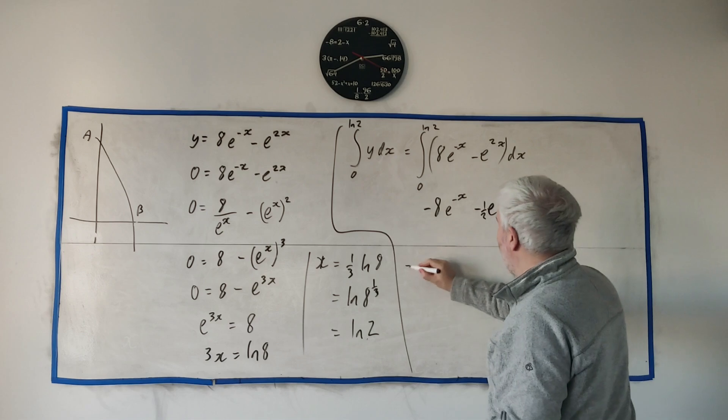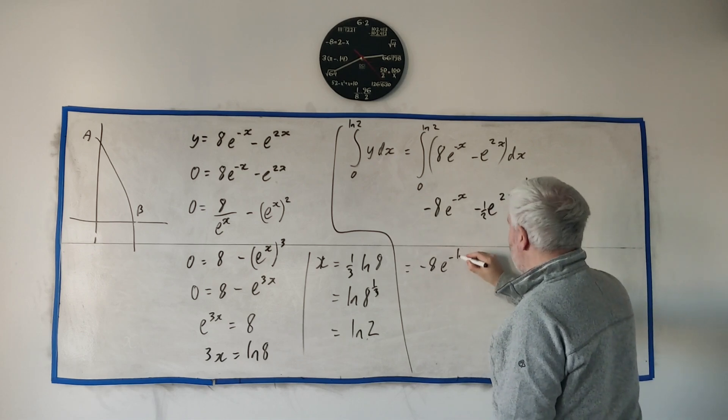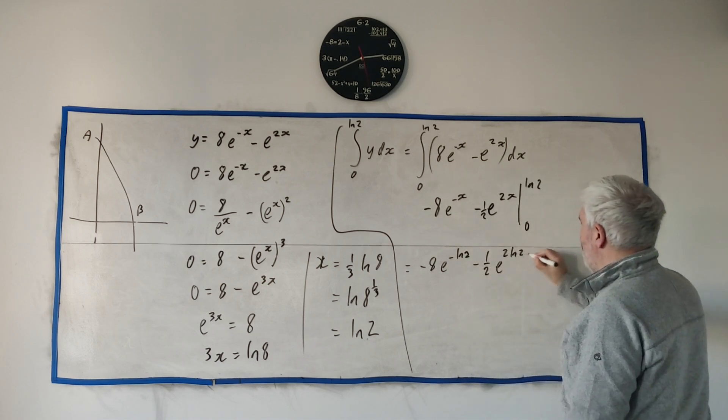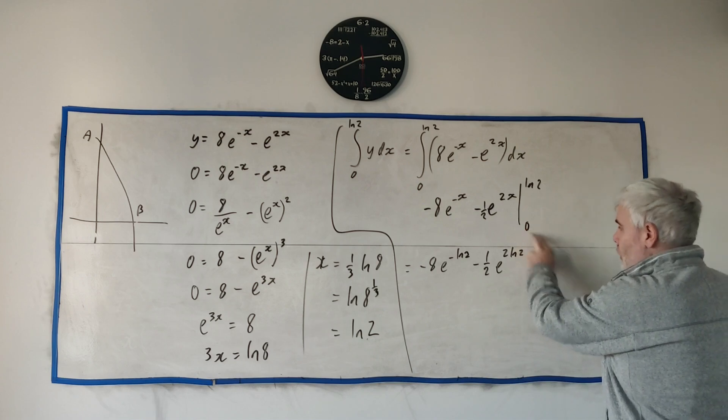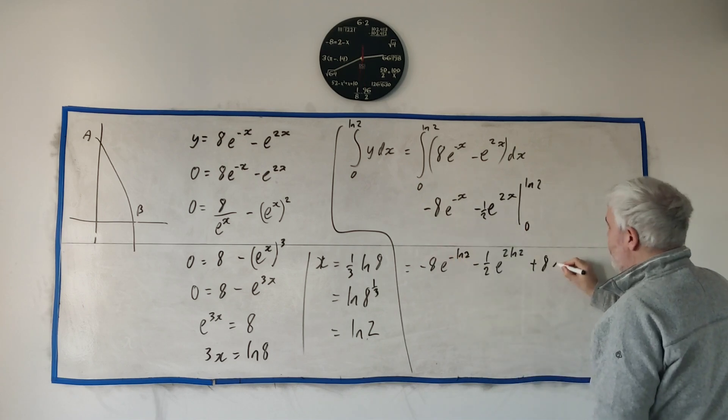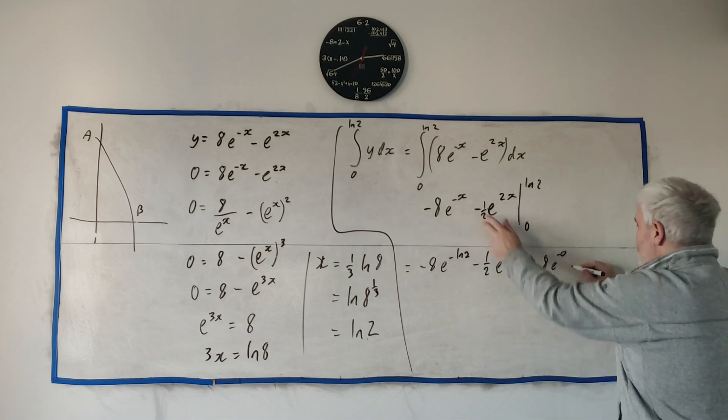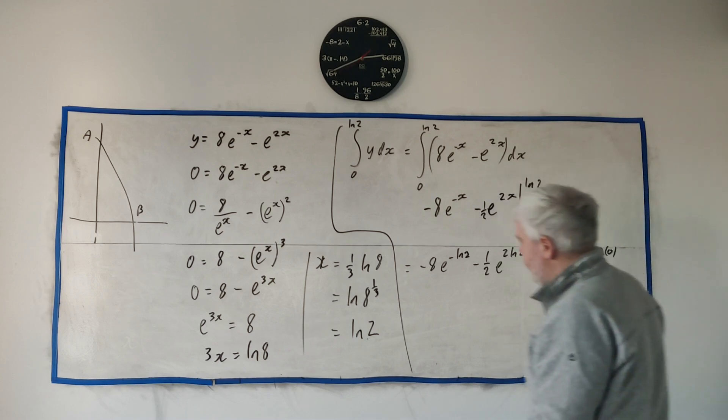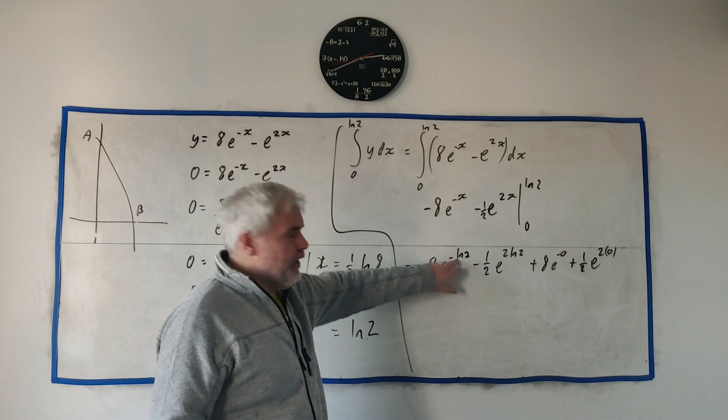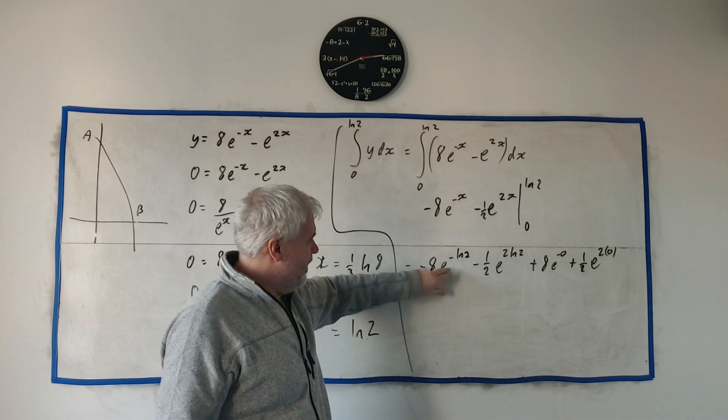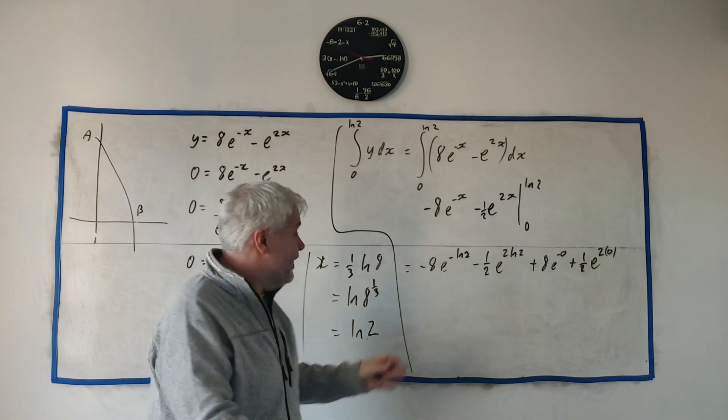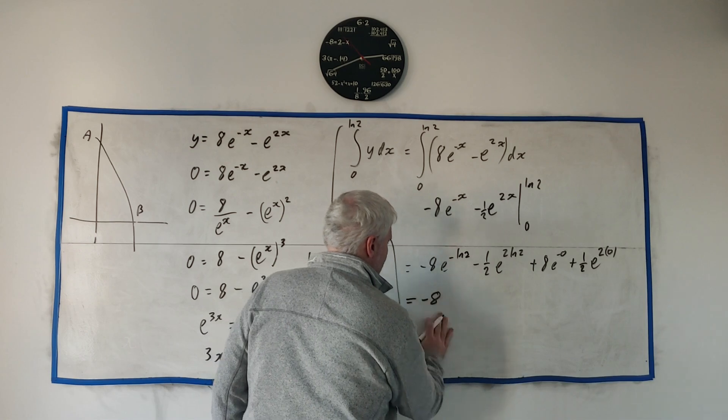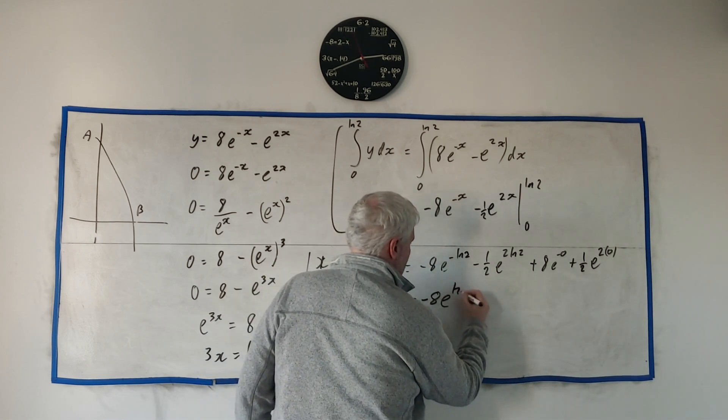So we just go ahead and put these in. This will become minus 8 e to the minus natural log 2, minus a half e to the 2 times natural log 2, minus we put 0 in. So that's minus minus 8 e to the minus 0, minus minus, that's plus half e to the 2 times 0. We have to be a little careful here. A lot of students are very tempted to just go e and the natural log cancel, we get minus 2. That's not true, that will be wrong.